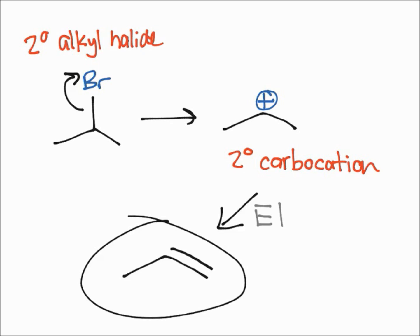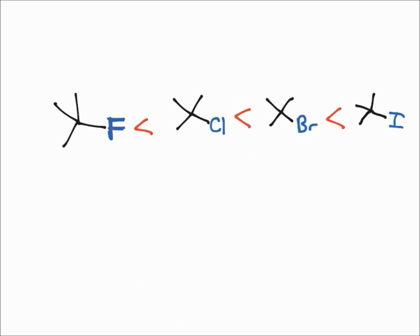Finally let's rank the leaving groups because the leaving group is crucial in E1 reactions. The rate of the reaction depends on the leaving group. As you can see here I've ranked the slowest on the left and the fastest on the right.